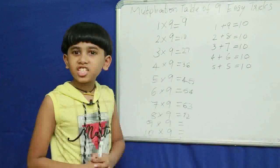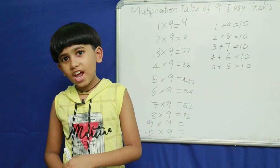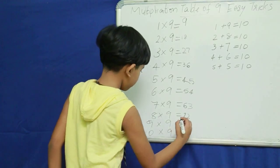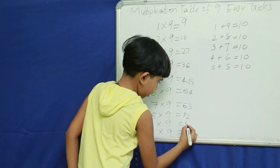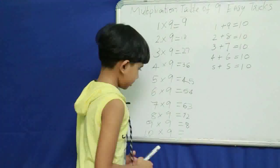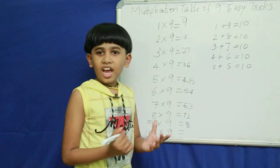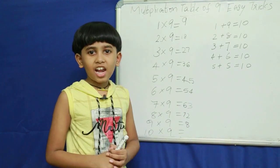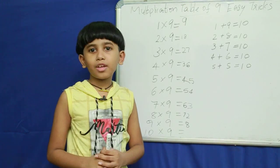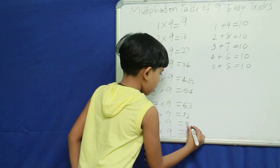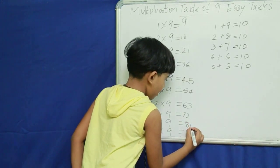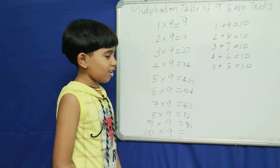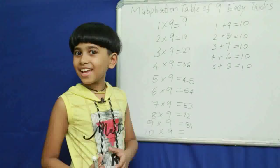Next, predecessor of 9 — 8. What do you add to 9 to get 10? 1. So we get 81.